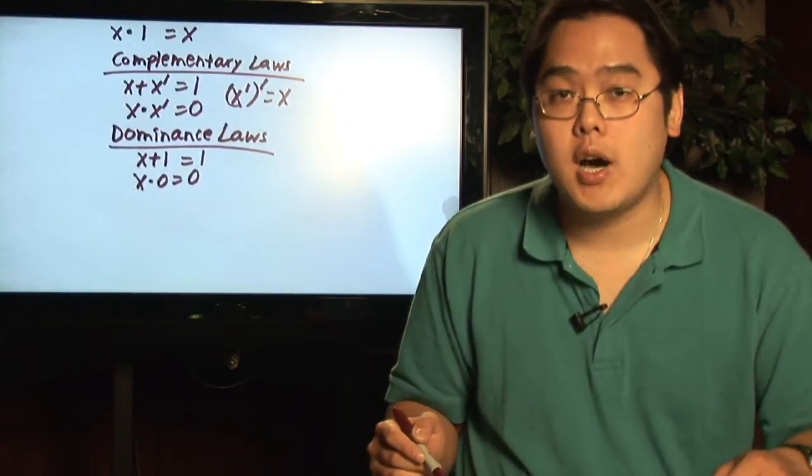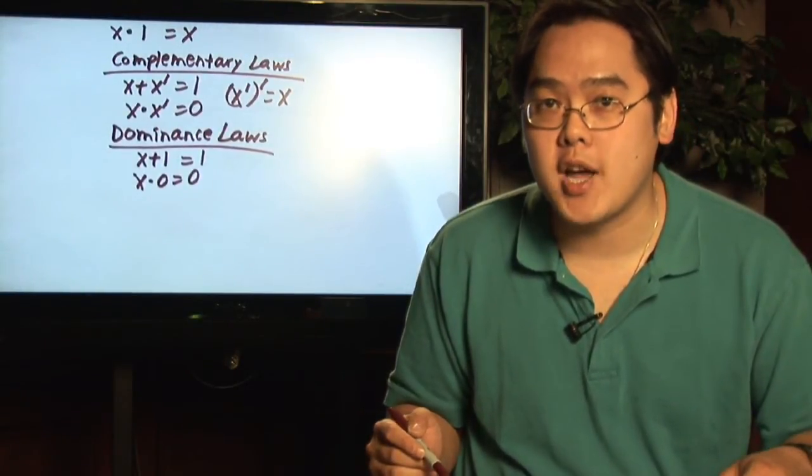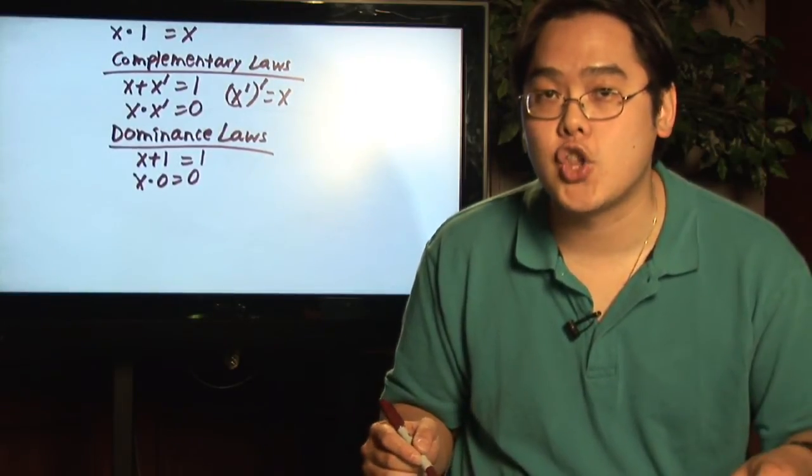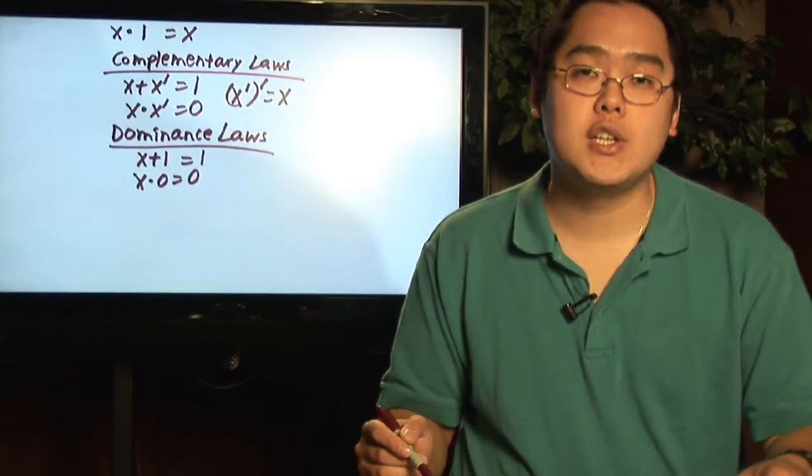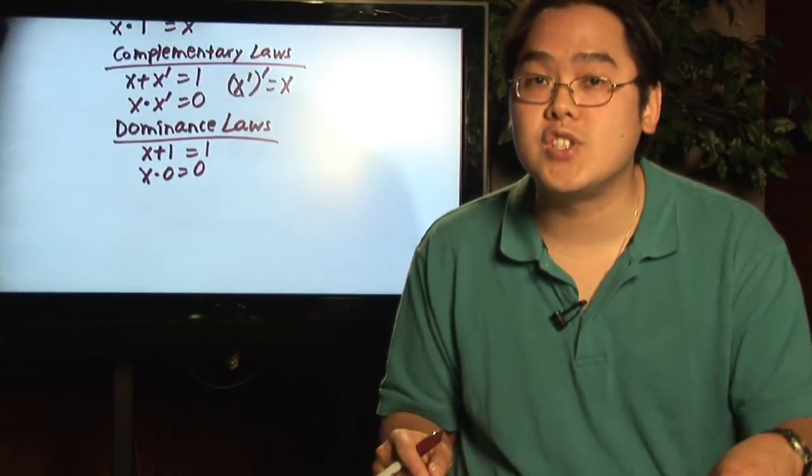The complementary laws: x plus x prime is equal to one, x times x prime is equal to zero, and the prime of x prime is x. The primes cancel each other out. The dominance laws: x plus one is equal to one, x times zero is equal to zero.